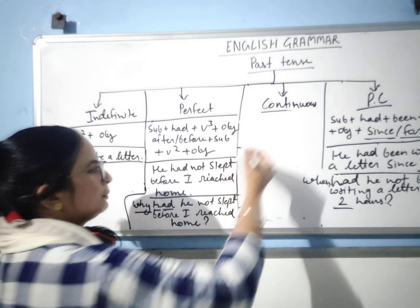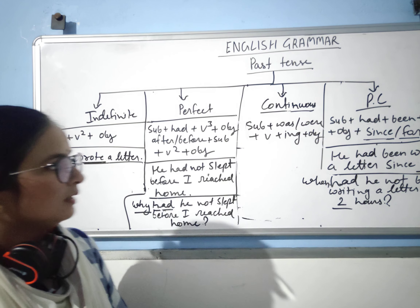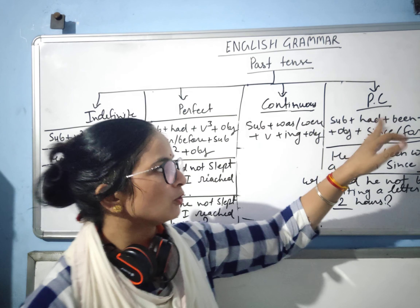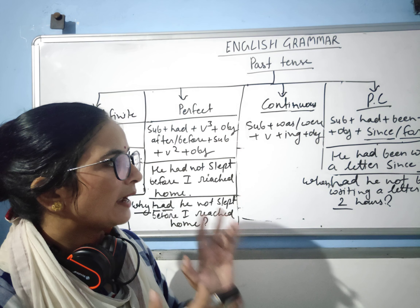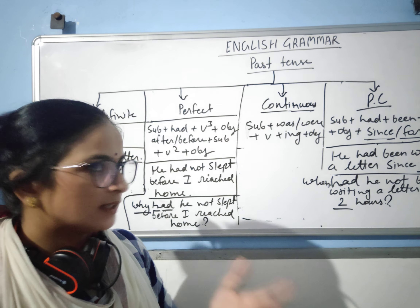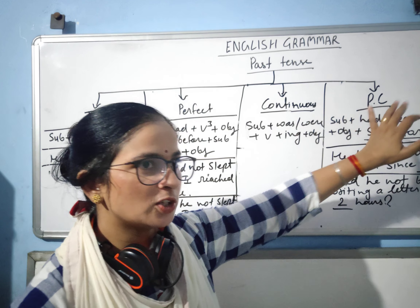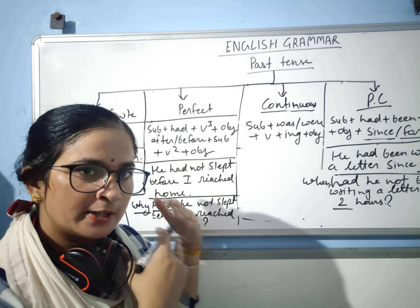The structure of past continuous is: subject plus 'was' plus verb plus ing plus object. 'Was' is used with singular subjects and 'were' with plural subjects. The structure of past perfect continuous is: subject plus 'had' plus 'been' plus verb plus ing plus object, plus 'since' or 'for'. 'Since' always comes with certain time and 'for' with uncertain time. Perfect continuous means the work started at a point in the past but is still going on continuously from that time.